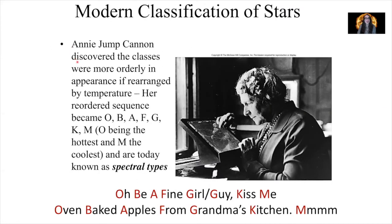Annie Jump Cannon discovered that the spectral classes were more orderly in appearance if arranged by temperature. Because the original spectra were labeled A through O based on hydrogen absorption strength, that didn't necessarily mean the temperatures were in order. So she arranged the sequence of stellar spectra by the temperature of those stars. The reordered sequence became O, B, A, F, G, K, M — with O being the hottest stars and M being the coolest. Today, these are what we call stellar spectral types.